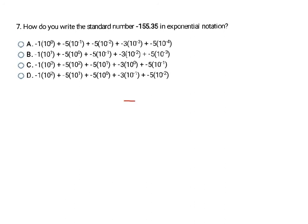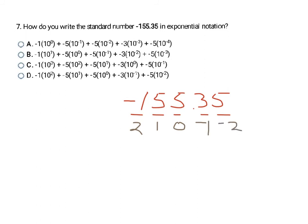In this question I'm going backwards — taking negative 155 and 35 hundredths and converting to exponential notation. I put blanks underneath and fill in the exponents: ones column is 0, tens is 1, hundreds is 2, tenths is negative 1, hundredths is negative 2. Since the original number is negative, where the exponent is 2 I put negative 1, where it's 1 I put negative 5, where it's 0 I put negative 5, where it's negative 1 I put 3, and where it's negative 2 I put negative 2. That makes my final answer D.